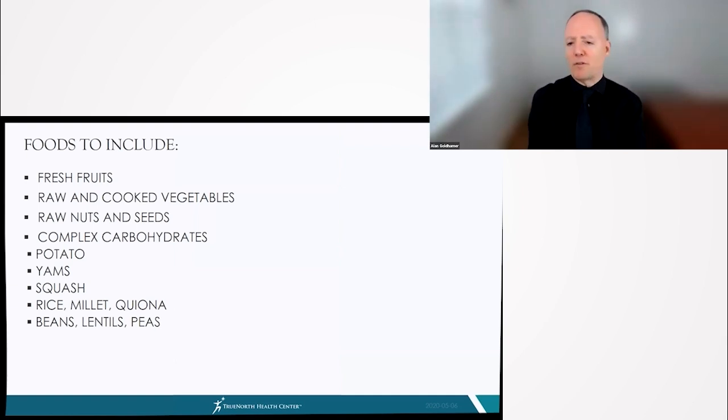So what's left if we can't eat meat, fish, fowl, eggs, dairy products, oil, salt, and sugar? If we have to get rid of 93% of all the calories that most people are eating, what do we eat? Well, foods to include: fruits, raw and cooked vegetables, raw nuts and seeds, and complex carbohydrates—the fuel that you're designed to eat. So potatoes, yams, squash, minimally processed whole non-glutinous grains, and beans like lentils and peas.